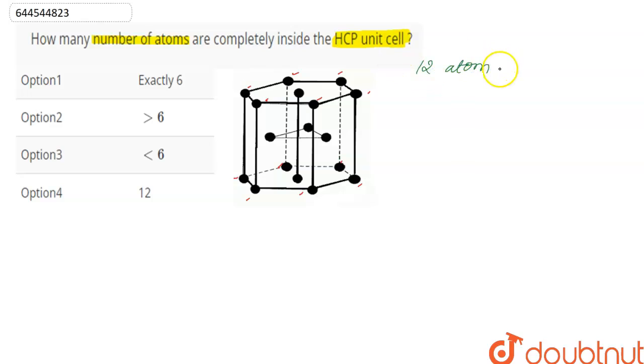And we have one and two—two atoms at face center, and total one, two, and three—three atoms in the body center.